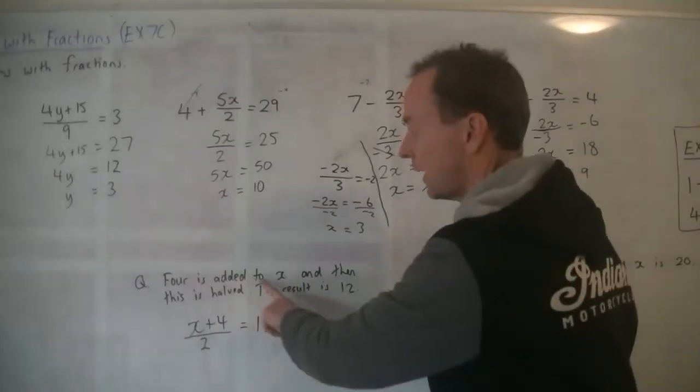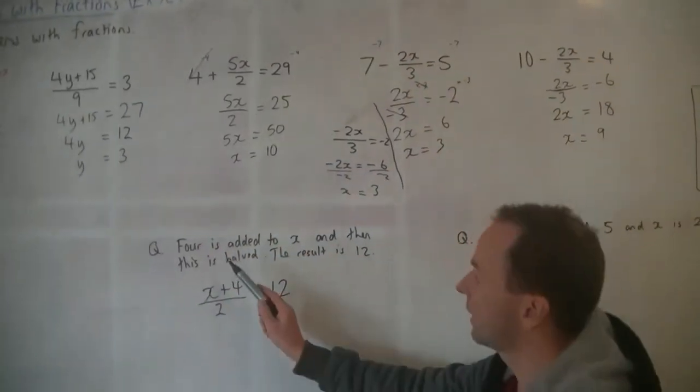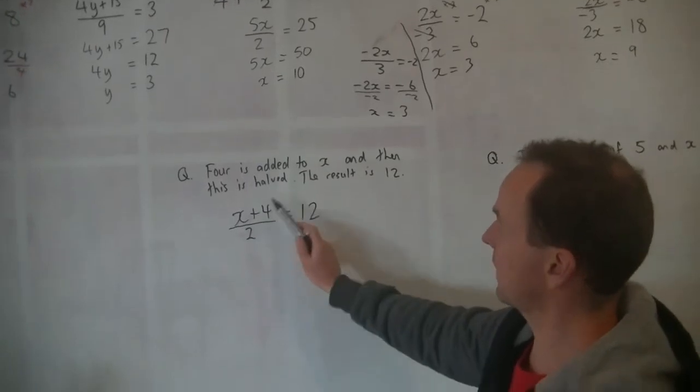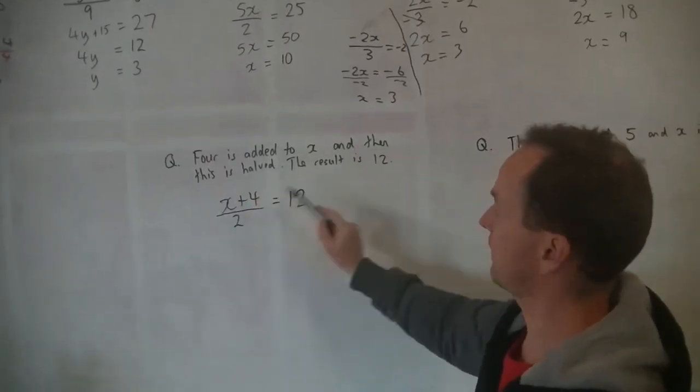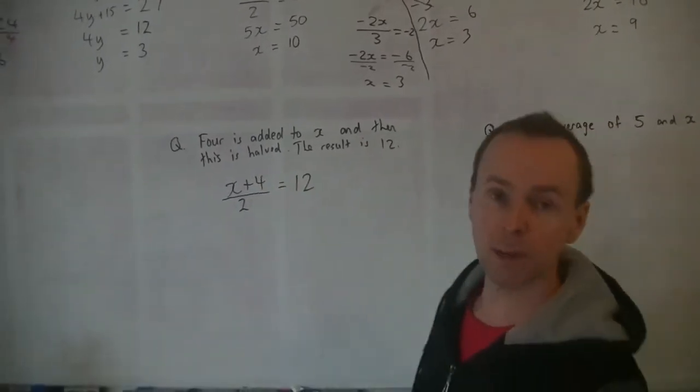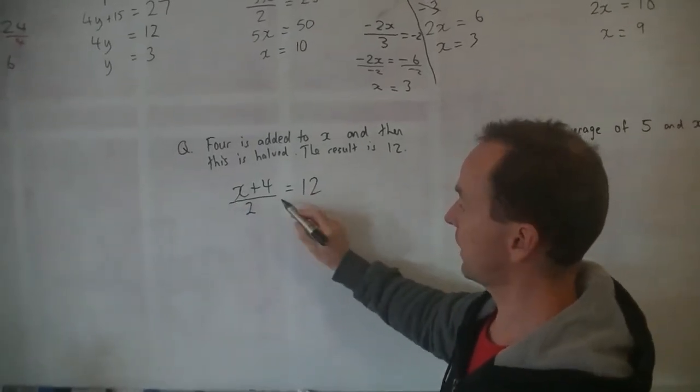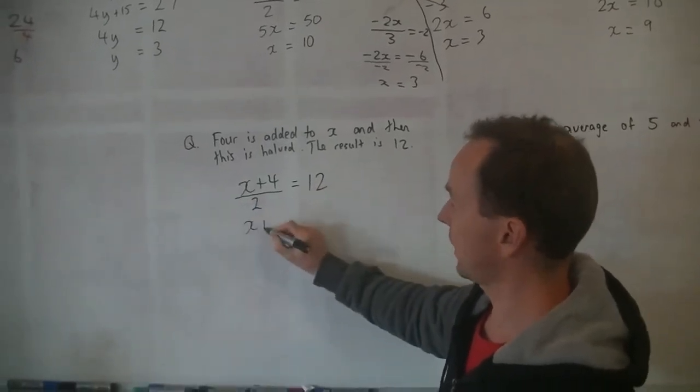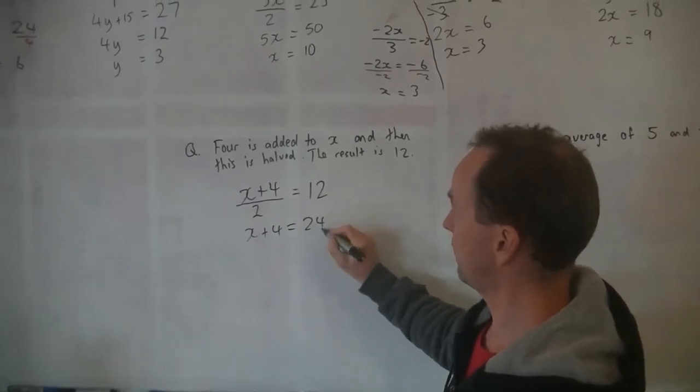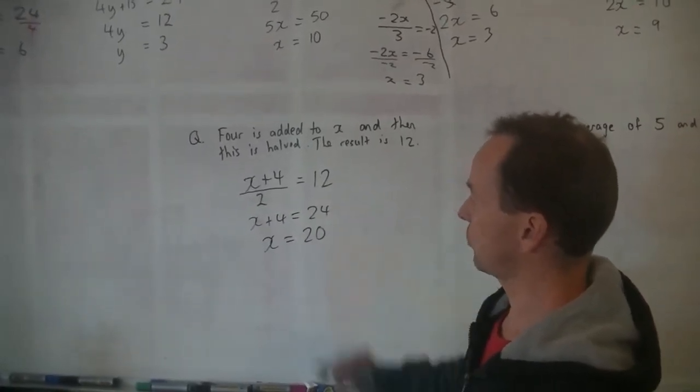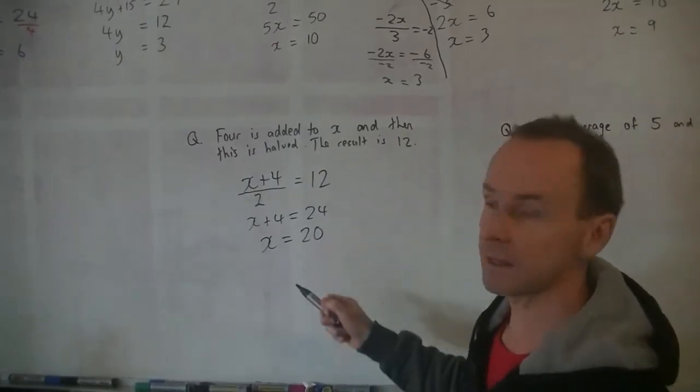That's one of the hardest bits is to actually read the question carefully. Once you've written something, check. Make sure that it makes sense. Have I got it right? 4 is added to x. Yep. And then this is halved. Yep. And then this is 12. Good. Doesn't matter how many times you read it, as long as it works. Okay, so the whole thing is divided by 2. Times 2 to both sides. x plus 4 equals 24. Minus 4 to both sides. x equals 20. So the maths should be easy. It's understanding that's important.